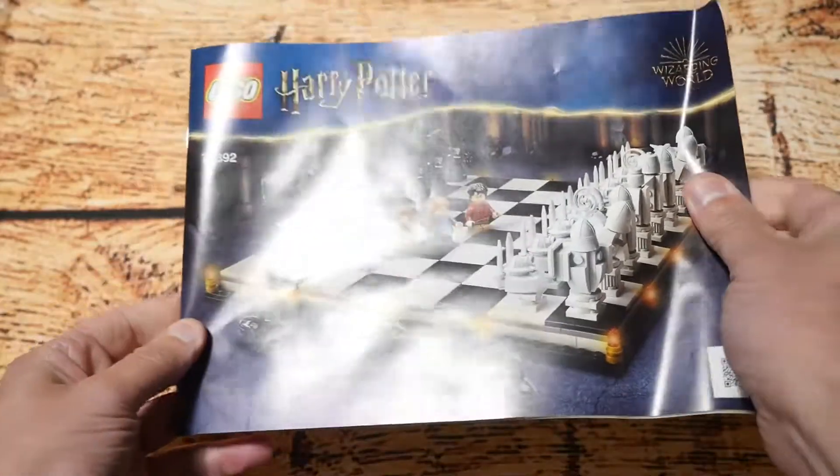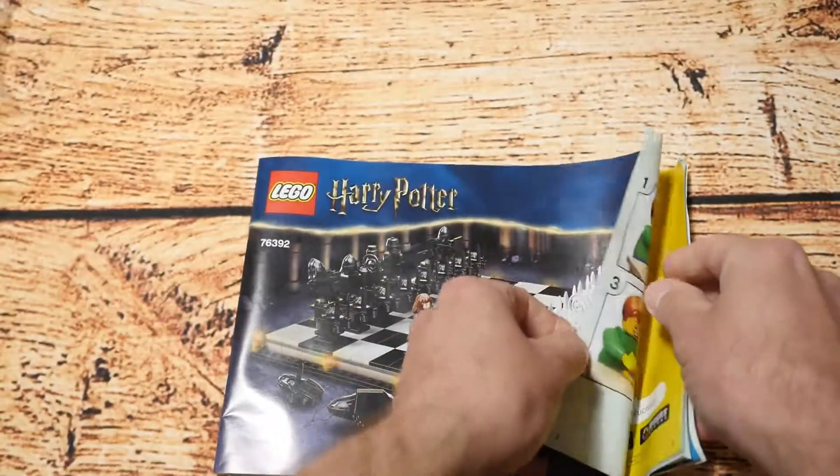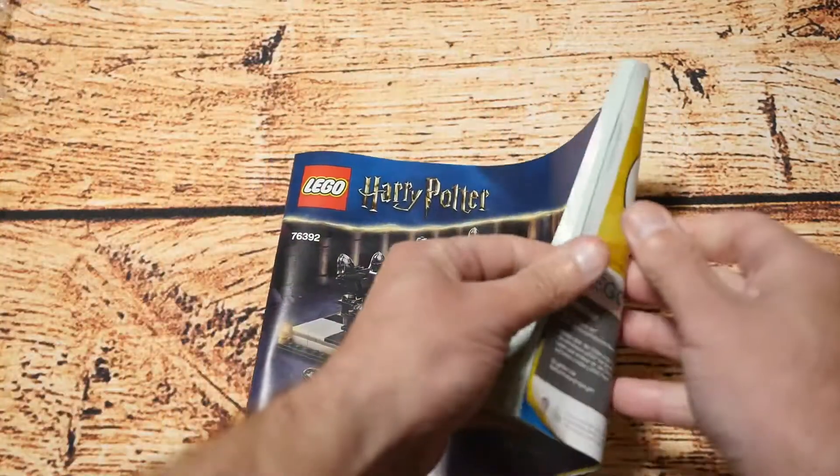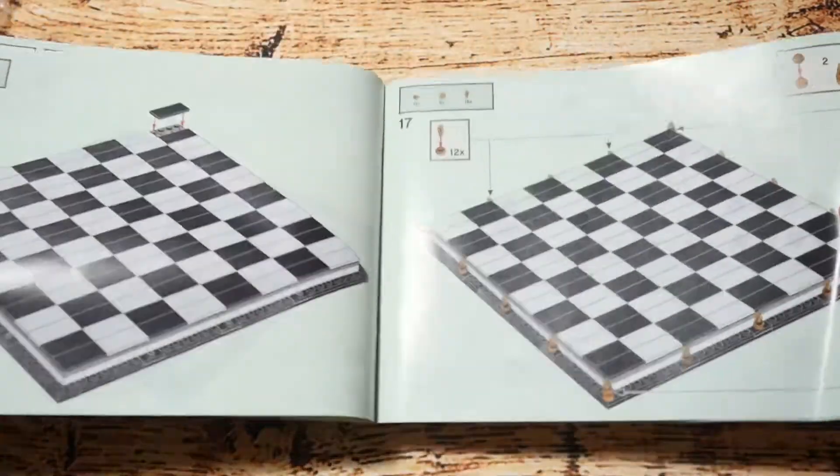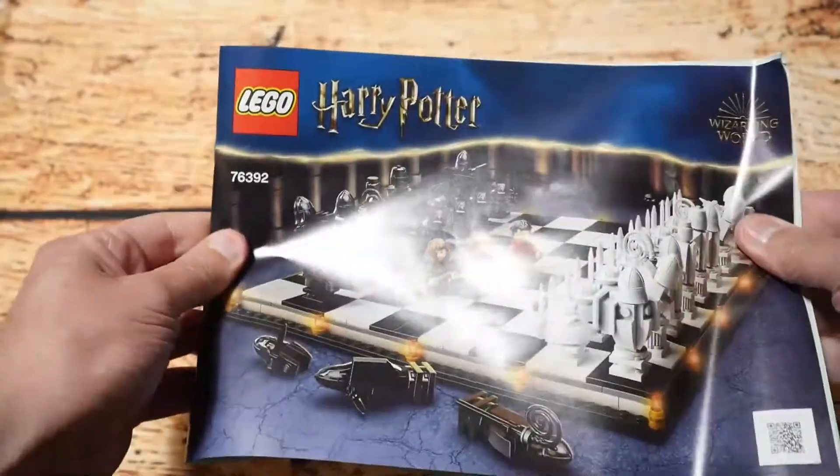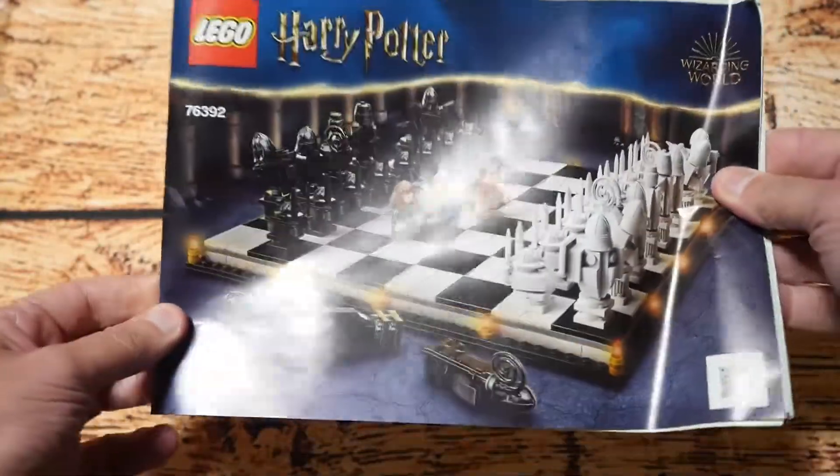Okay, so the first thing is the manual and as you can see it will cover the build that we've got here which is this Hogwarts chess set and this will go through all the different steps to make it. So that's good that they've included a nice paper manual and it's a good size too which makes it easy to see.